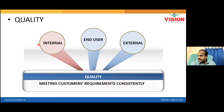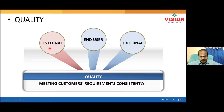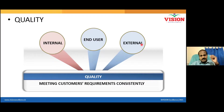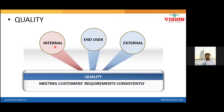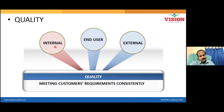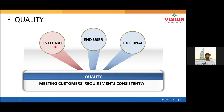The person assembling the laptop is an internal customer — they have certain requirements, like all the parts, assembly toolkit, and a workspace. The person testing the laptop is an internal customer. The person packing the laptop is an internal customer. But the final dispatch is given to a courier company. That courier company is outside your organization, so they are considered an external customer.